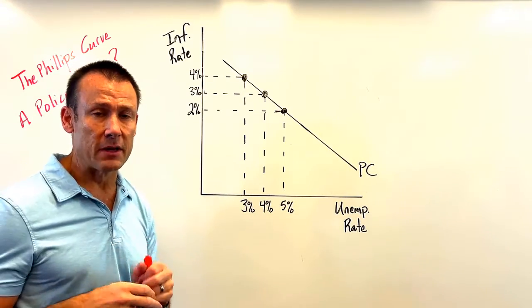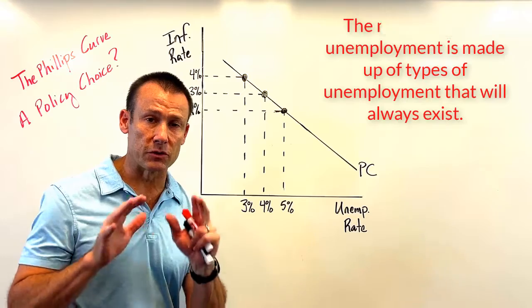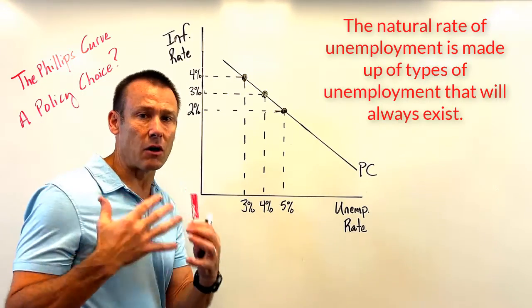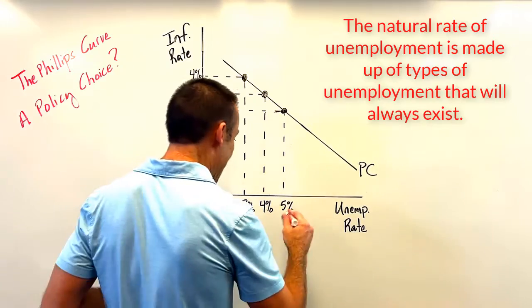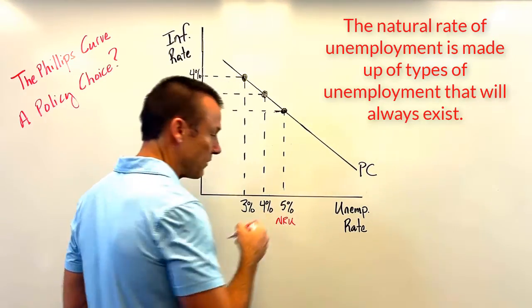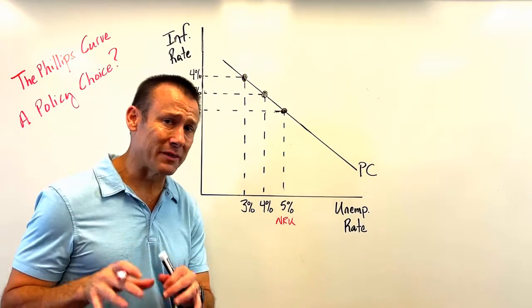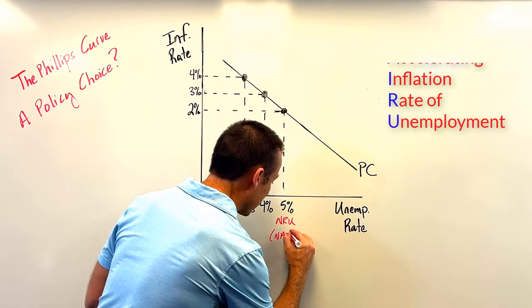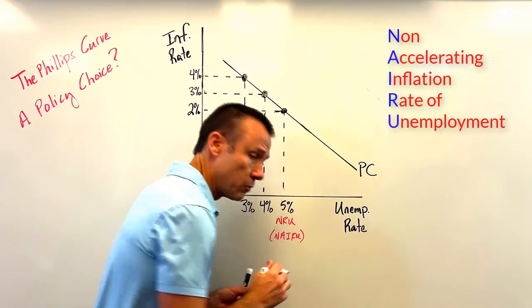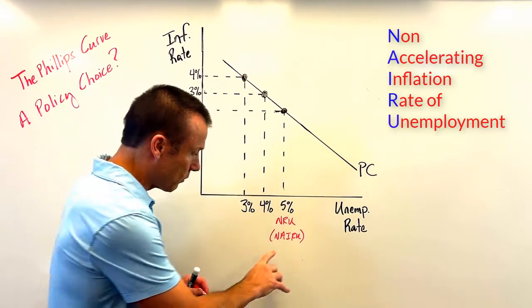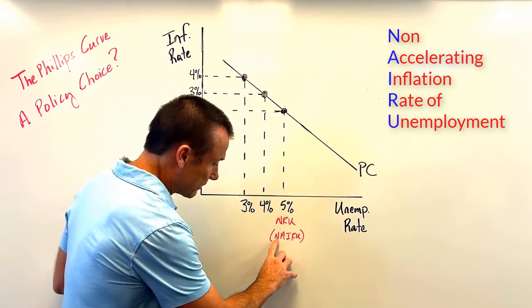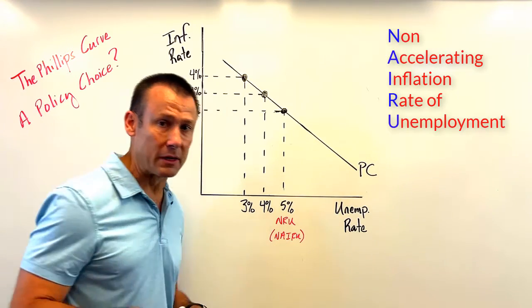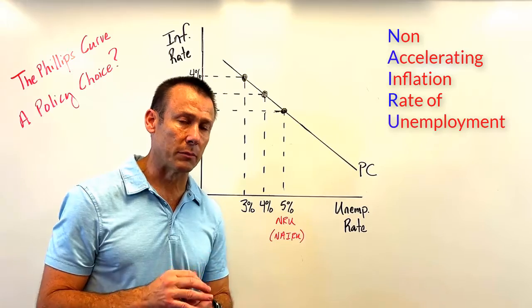There is a natural rate of unemployment. For purposes of this video, we're going to say the natural rate of unemployment is 5%. And the natural rate of unemployment is the NAIRU for a country — the Non-Accelerating Inflation Rate of Unemployment.